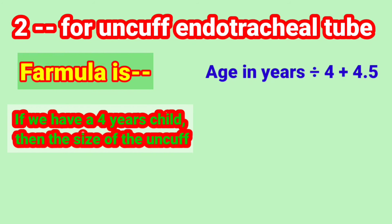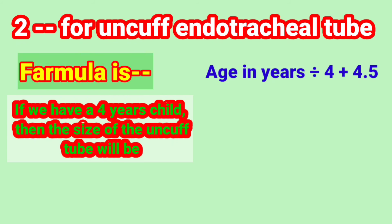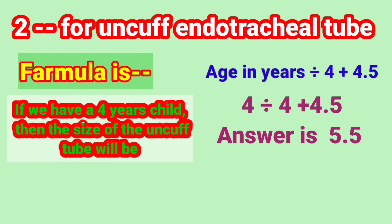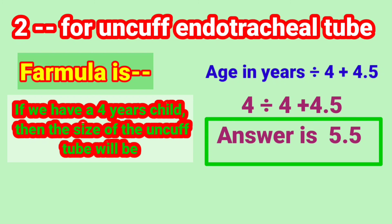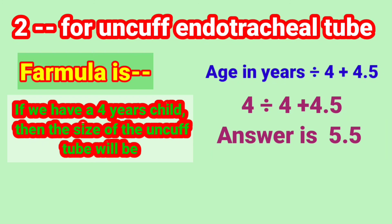If we have a 4-year-old child, we put the age into the formula: 4 years divided by 4, plus 4.5. The answer will be 5.5. It means we can use a 5.5 uncuffed endotracheal tube for intubation in a 4-year-old child. That is all about endotracheal tube size calculation in children.